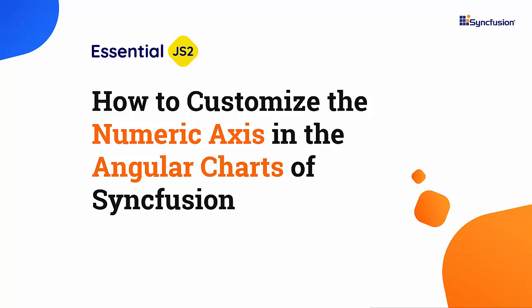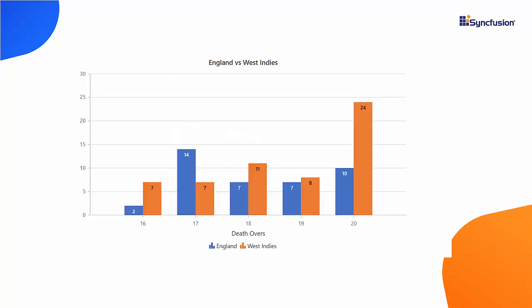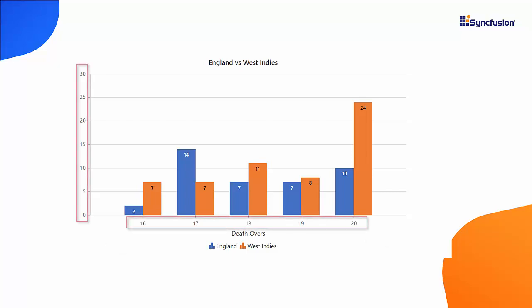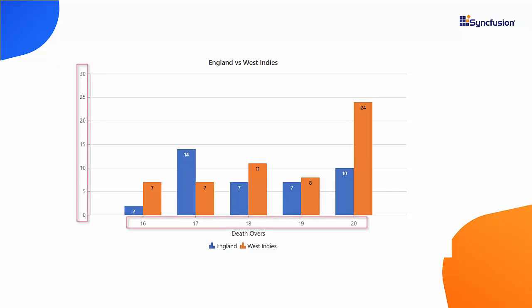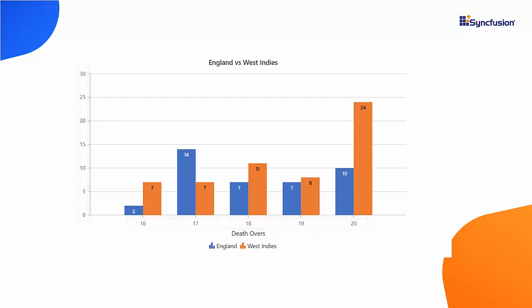To give a brief overview about the numeric axis, look at this column series chart that shows the runs scored by the teams England and West Indies, comparing their runs between overs 16 and 20. You can notice this chart displaying numeric values at both the x and y axis to show the score comparison of two different teams based on specific overs. I can use the numeric axis type at both axes to populate the over and run values, and also enhance the x axis appearance with customizable elements like axis labels and axis range.